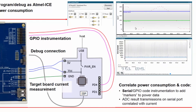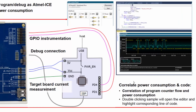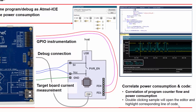In this example, I'm showing a serial correlation of program counter flow and power consumption. Double-clicking a sample will open the editor and highlight the corresponding line of code.